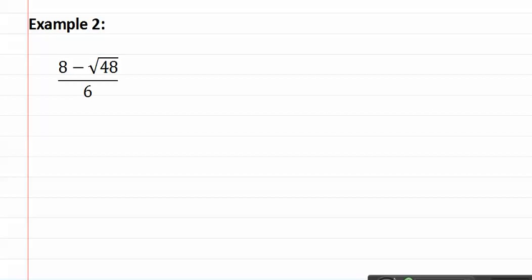Here is example two. Once again, we need to start by simplifying the radical. Forty-eight breaks down to two and twenty-four, two and twelve, two and six, and two and three, which becomes two to the fourth times three. Let's rewrite this.